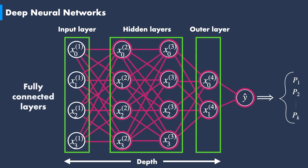Finally, such a deep neural network is known as a fully connected network. This is in contrast to other types of deep neural networks such as convolutional neural networks or recurrent neural networks, which we will cover in future videos.